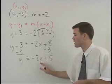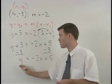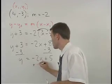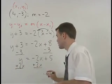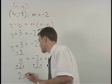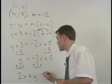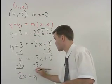Finally, we move our x term to the left side of the equation by adding 2x to both sides. And our answer is 2x plus y equals 5.